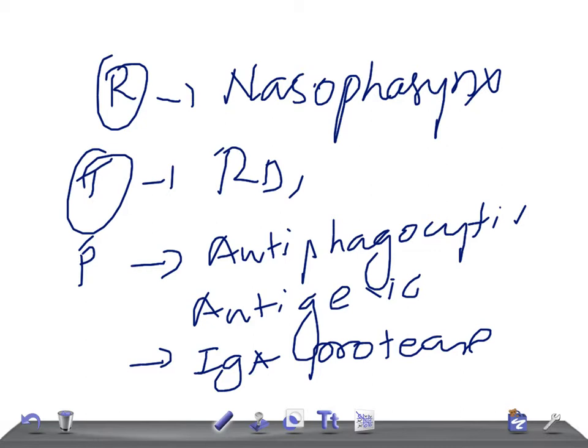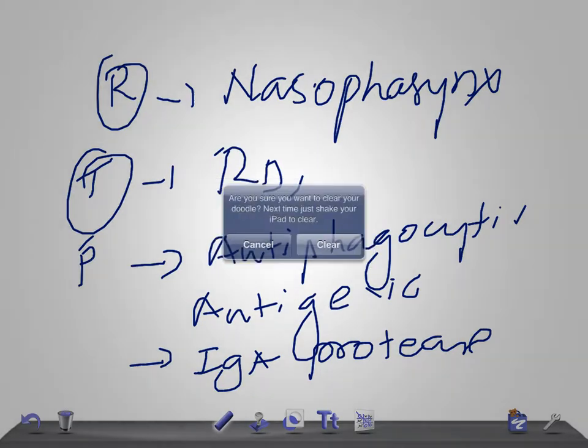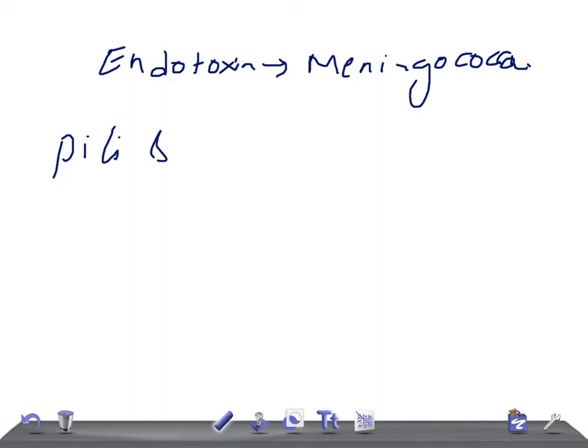Then we have endotoxin, lipopolysaccharide endotoxin. This lipopolysaccharide causes meningococcemia and overproduction of outer membrane. They have pili and outer membrane proteins, OMPs. They are very helpful to colonize and invade.